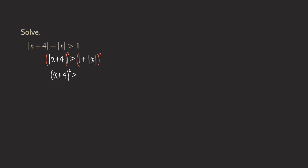So now let's recall this formula. We are going to recall that there is the binomial square formula, and that is equal to a squared plus 2 times a times b plus b squared. So you can see that the 1 is the a, and the b is absolute value of x. The 1 is this 1 and the absolute value of x is the b.